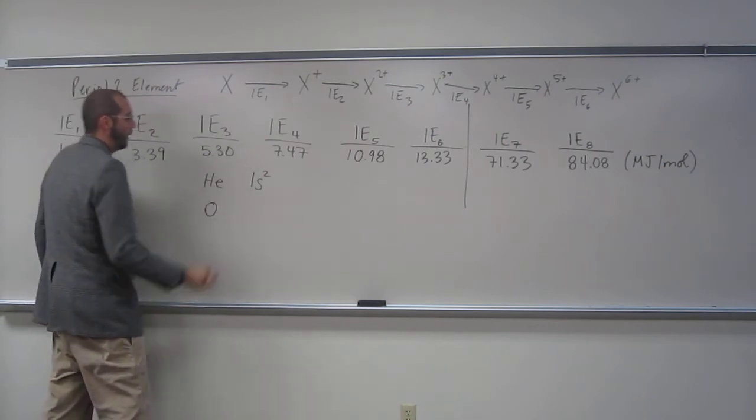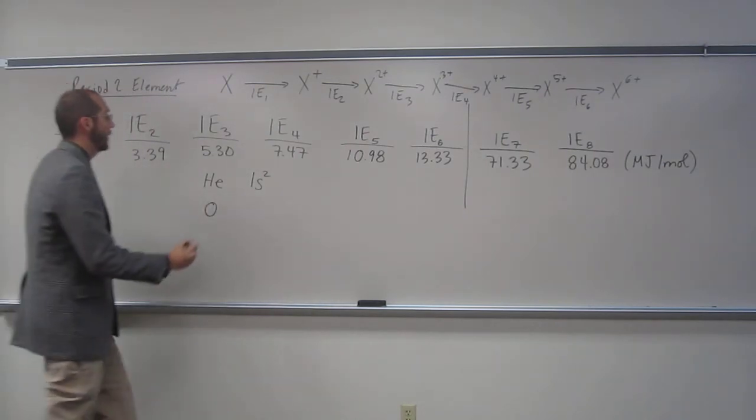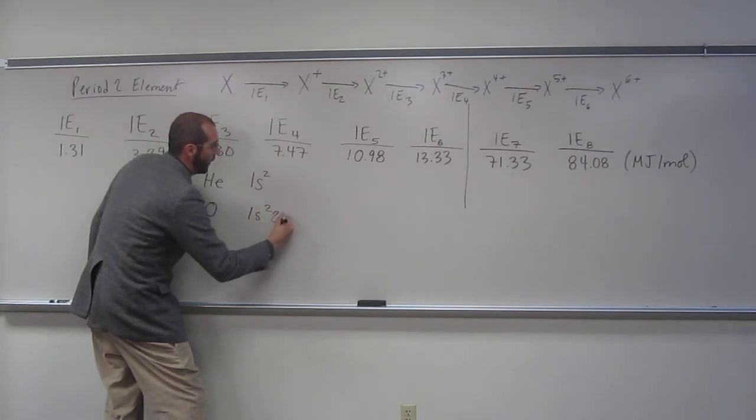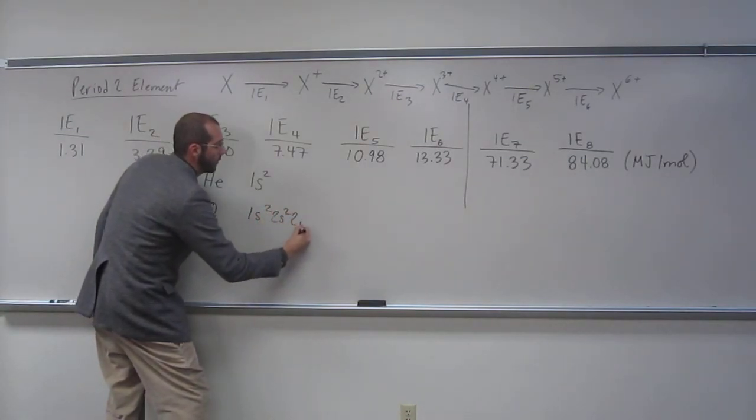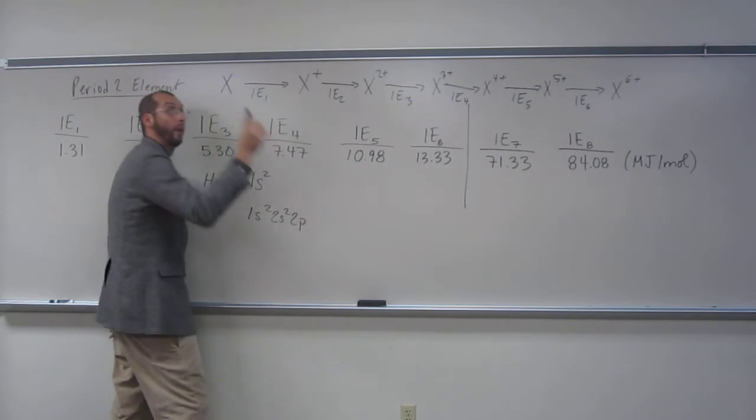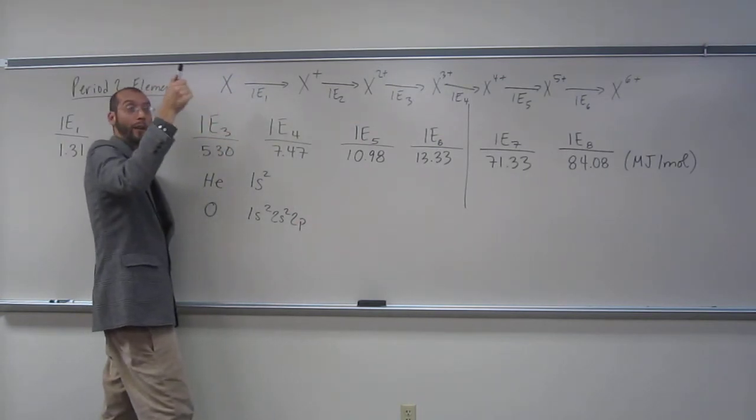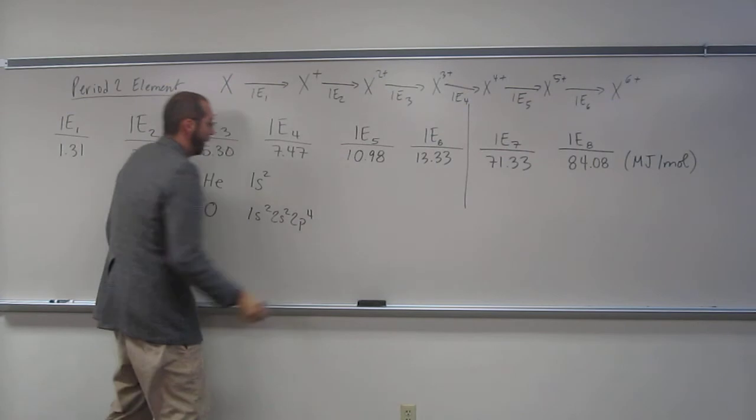Okay, so what's the electron configuration of oxygen? It's 1s2, 2s2, 2p... 1, 2, how many? 3, 4, right? 4.